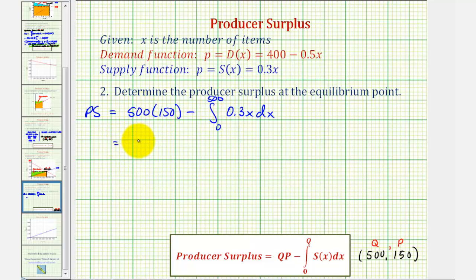So we have 75,000, and then minus the definite integral. To evaluate this, we'll first find the anti-derivative of 0.3x, which would be 0.3 times x squared divided by 2. Well, 0.3 times one-half or divided by 2 would be 0.15. So now we'll evaluate this at 500 and then zero and then find the difference.